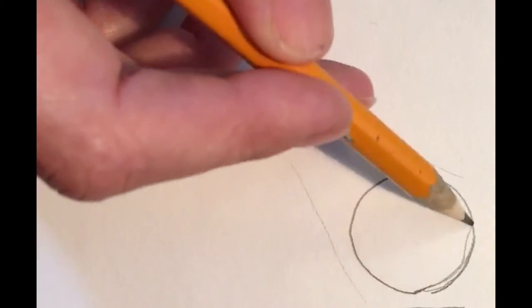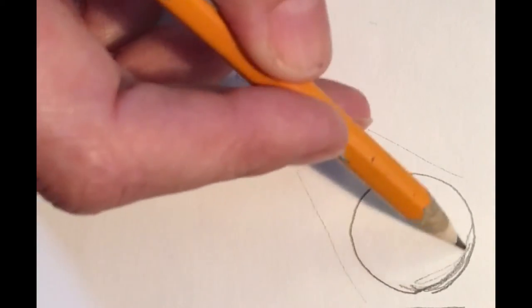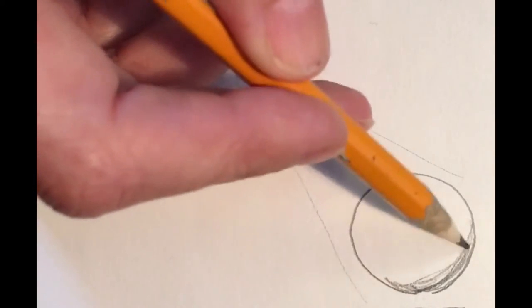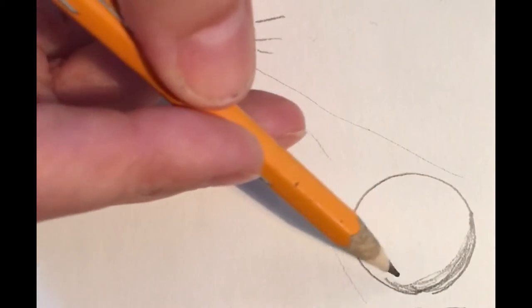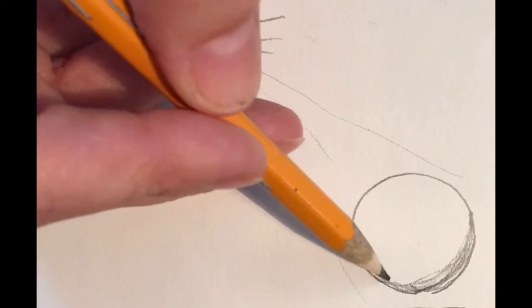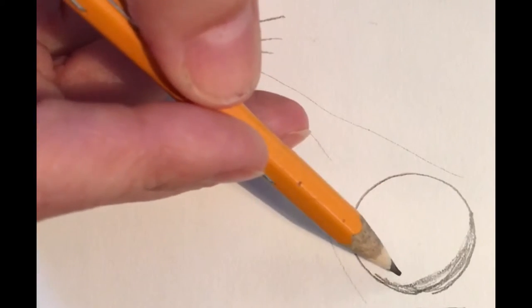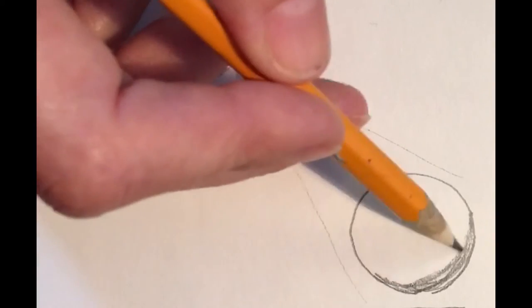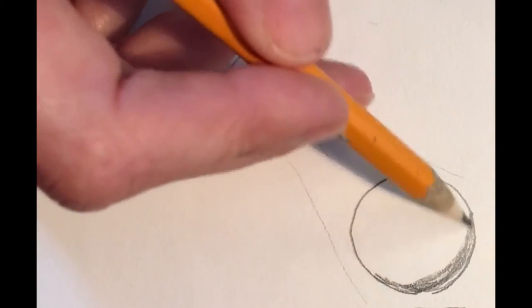So we're going to first just put in some shadows here. Now shading can get really complicated when you talk about reflective light and all that, but we're just going to keep it really simple just to be able to add some shading to our zentangles. So let's just have a little bit of shadow under there.